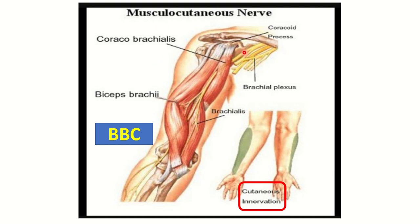After arising from the lateral cord, the musculocutaneous nerve first pierces the coracobrachialis muscle, then runs beneath the biceps brachii and in front of the coracobrachialis and brachialis muscles. This nerve supplies three important muscles, remembered as BBC: B for biceps brachii, B for brachialis, and C for coracobrachialis.